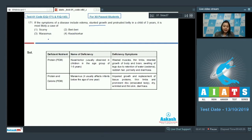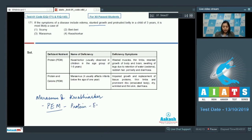In the options we have: option 1 scurvy, 2 beriberi, 3 marasmus, and 4 kwashiorkor. Marasmus and kwashiorkor come under PEM, that is protein energy malnutrition. Scurvy is caused by deficiency of vitamin C and beriberi by deficiency of vitamin B1, but deficiency of a single vitamin usually does not cause stunted growth and edema.